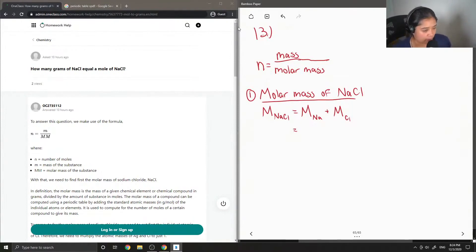So on the periodic table, we'll find that the molar mass of sodium is 22.99 grams per mole, and the molar mass of chlorine is 35.45 grams per mole. Adding these values up gives us a molar mass of around 58.44 grams per mole.